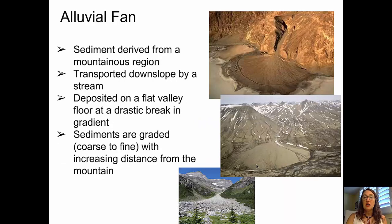Just like a delta, we have an alluvial fan. However, an alluvial fan is a deposit that forms on the surface. These typically form in mountainous regions where a stream flowing through mountains suddenly reaches a flatter area. The slope and gradient are dramatically reduced, causing a lot of sediment to be deposited. Just like in deltas, the sediment deposits are graded from coarse close to the mountains to much finer with distance from the mountain.